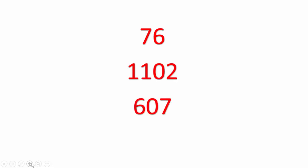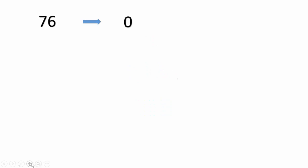Let us consider number 76. The algorithm says that if the number is even we write down zero, and if the number is odd we write down one. As 76 is an even number, we write down zero and directly divide it by 2 to get 38.